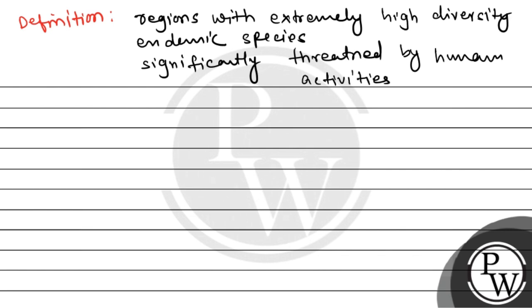Now we will talk about how many global biodiversity hotspots there are. There are 36 recognized biodiversity hotspots across the world.